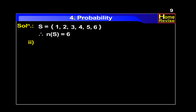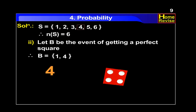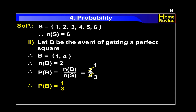Number 2. Let B be the event of getting a perfect square. Therefore, B is equal to: 1, 4. Therefore, n of B is equal to 2. Therefore, probability of B is equal to n of B upon n of S, which is equal to 2 upon 6, which simplifies to 1 upon 3.